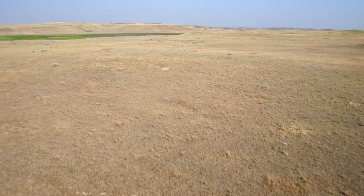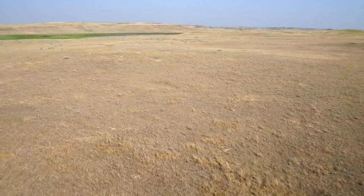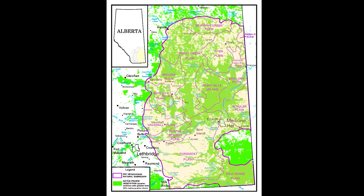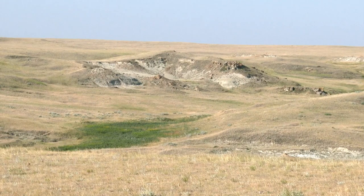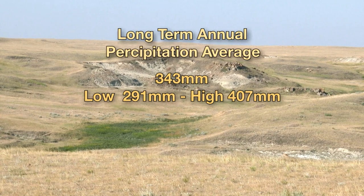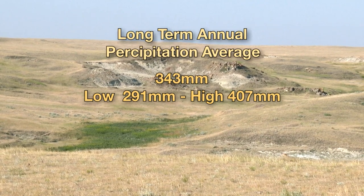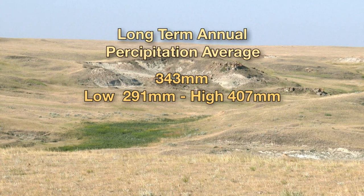The dry mixed grass — formerly the brown soil zone — is the driest of the four grassland natural subregions, with about 43 percent of the original area remaining as native plant communities. Long-term annual precipitation averages 343 millimeters, ranging from a low of 291 to a high of 407 millimeters. Summers are short with warm to hot days and long cold winters.